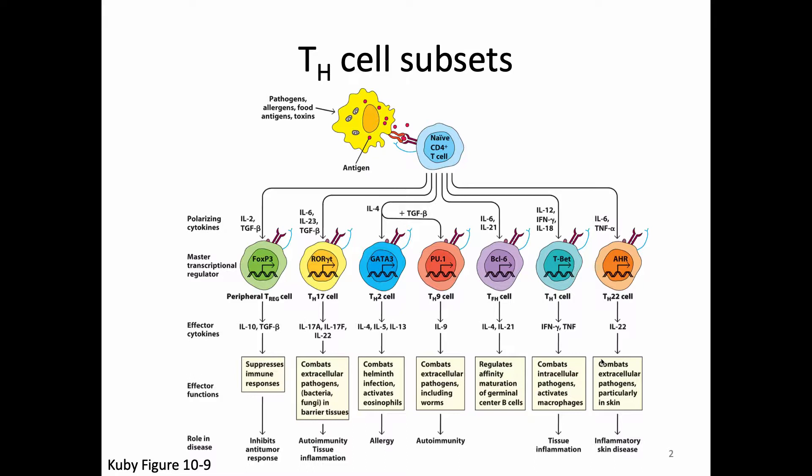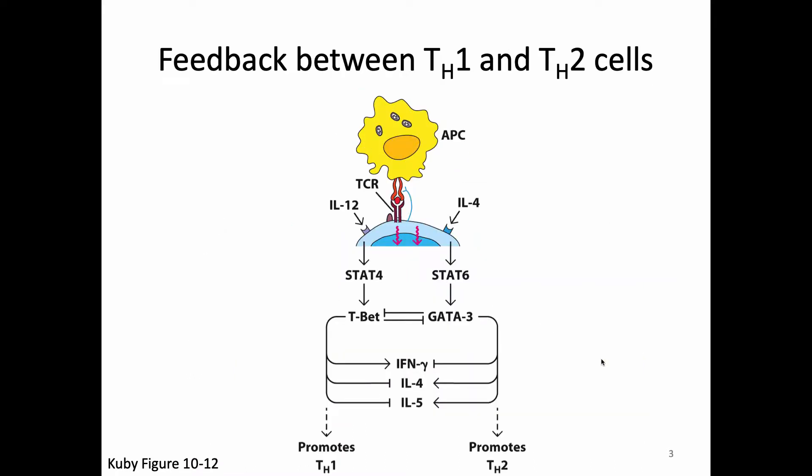One of the other things that we talked about that is really important is that these different cell types have positive feedback loops where once we start making one of these types of cells, we can actually enhance the production of more of that subtype. But we also see negative feedback inhibiting some of the other cell types. TH1 polarizing factors not only induce TH1 polarization, they actively inhibit TH2 polarization. And the same was true of TH2 factors — TH2 will inhibit TH1 polarization. This feedback between these responses is incredibly important.